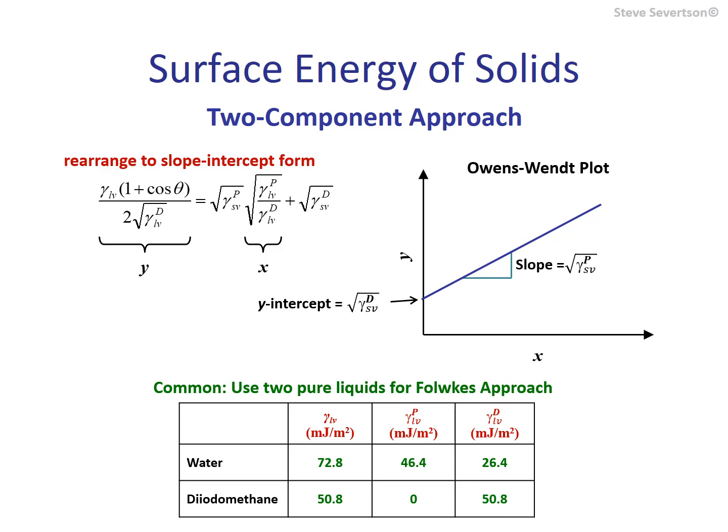The liquids commonly used are diiodomethane and water. As can be seen from the table shown on the slide, diiodomethane possesses only a dispersive component, while water possesses both. The contact angle measurements for both diiodomethane and water provide the data necessary to estimate these components for the solid being characterized. It should be emphasized that a variety of other theories exist which, based on contact angle measurements, allow for the estimate of surface-free energy. These differ in how they deal with asymmetric interaction energies and some further break down contributions to the polar component.